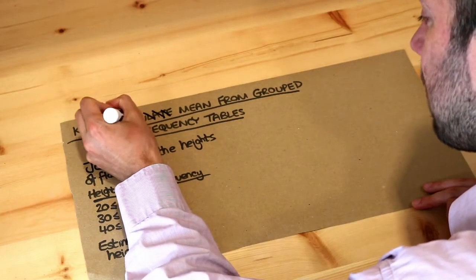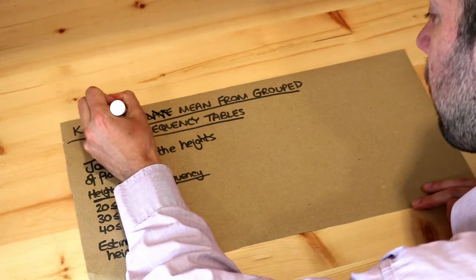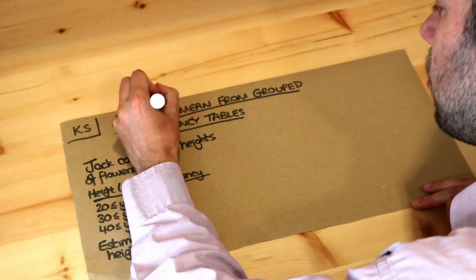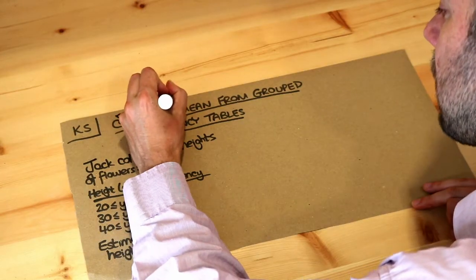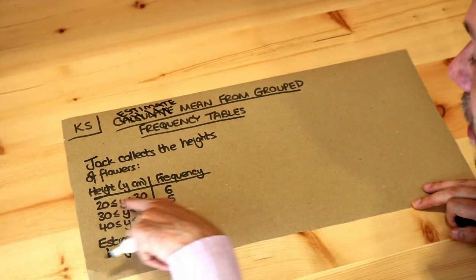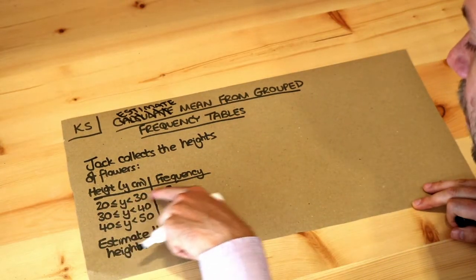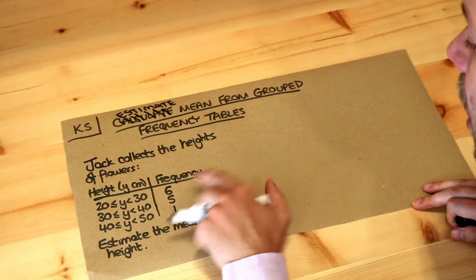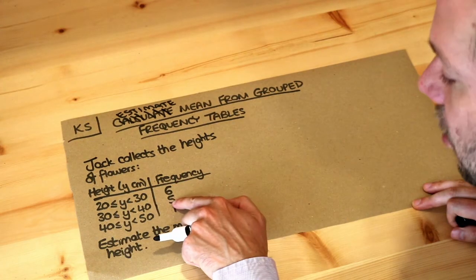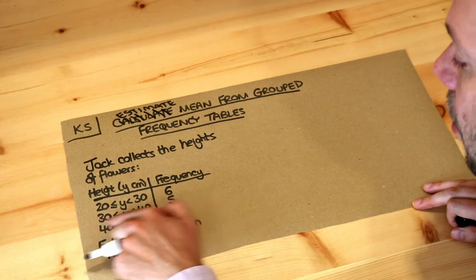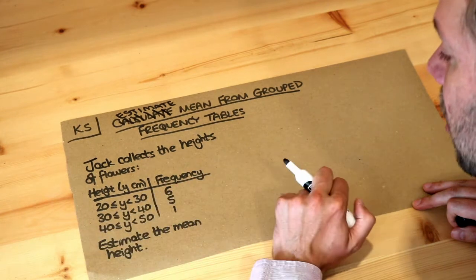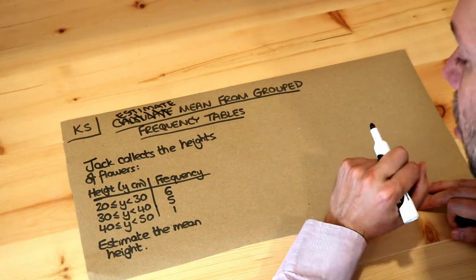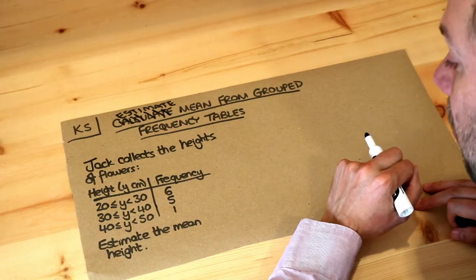Really I should be saying estimate the mean, not calculate the mean, because it's not actually possible to work out the exact mean. We don't know the exact height of these six flowers in the 20 to 30 centimetre range, or the exact heights of the five flowers in the next range. So we can only estimate what the mean is — we can't actually calculate it.